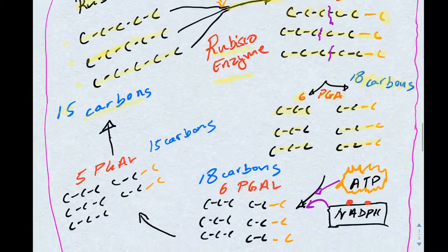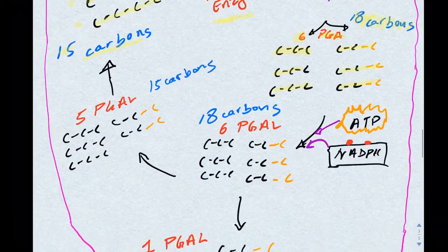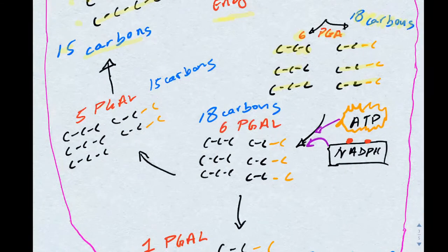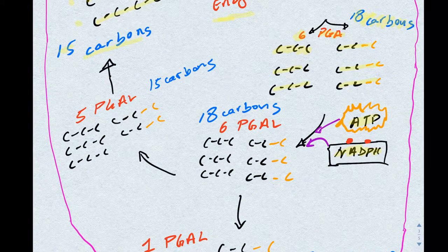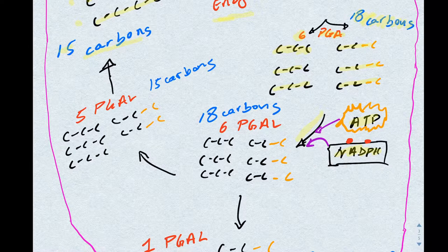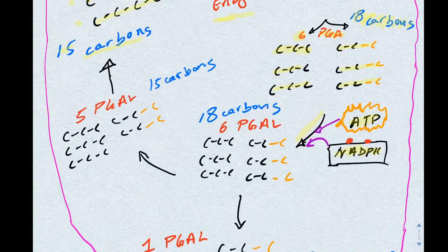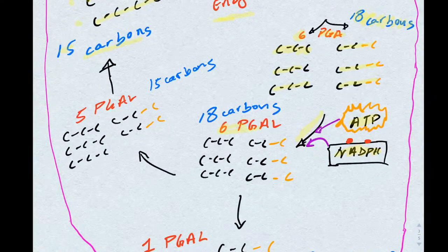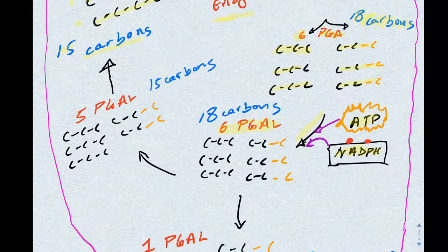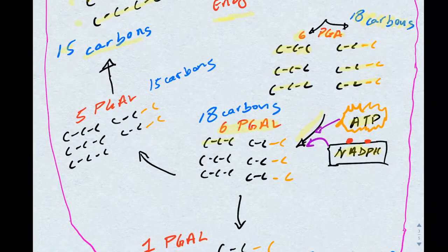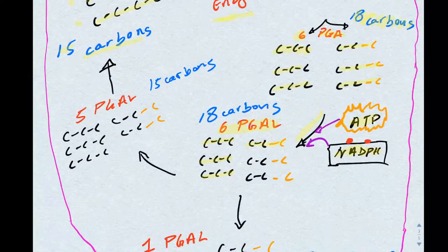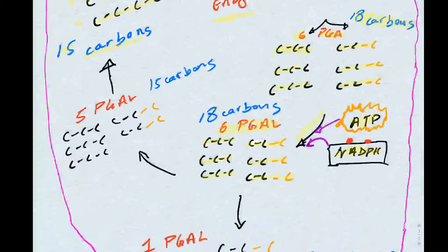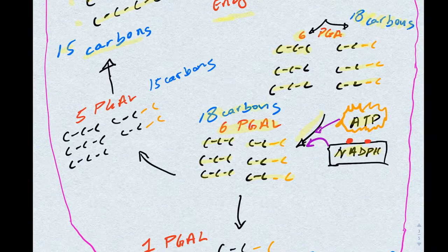The next step uses the energy from the light reactions in the molecules known as ATP and NADPH to convert the six PGAs into six PGALs. Again, if we count up the number of carbons, we have six PGALs, each with three carbons on it. We still have 18 carbon molecules.